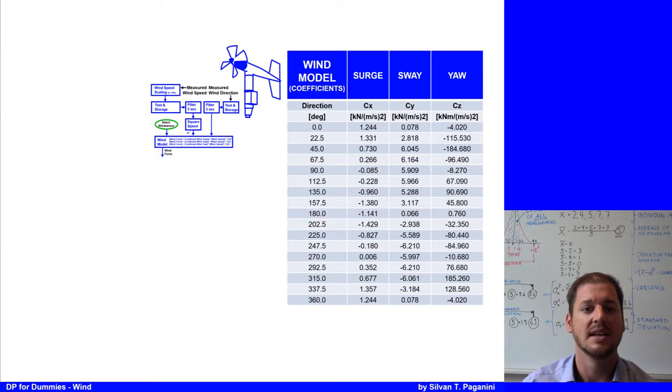Here's an example. There will be normally only one set of wind coefficients, but on a vessel changing the draft drastically during a DP operation, there can be sets for different drafts.